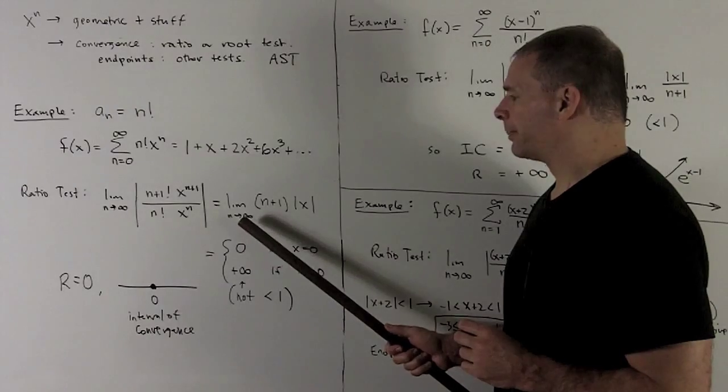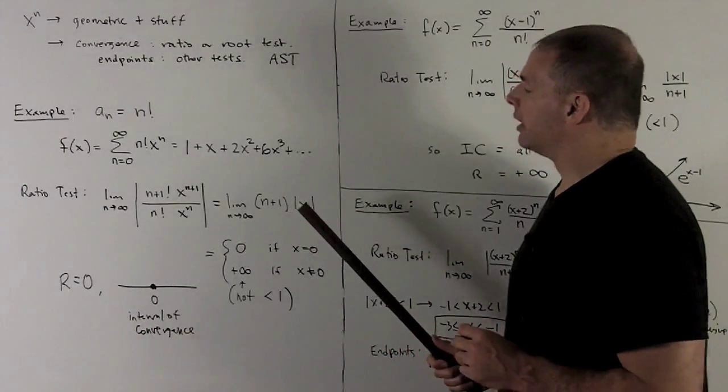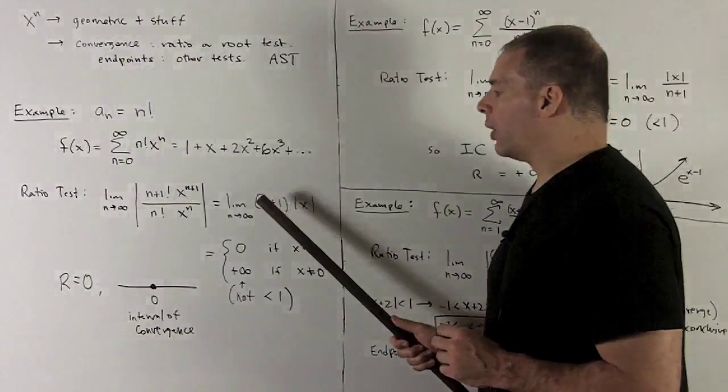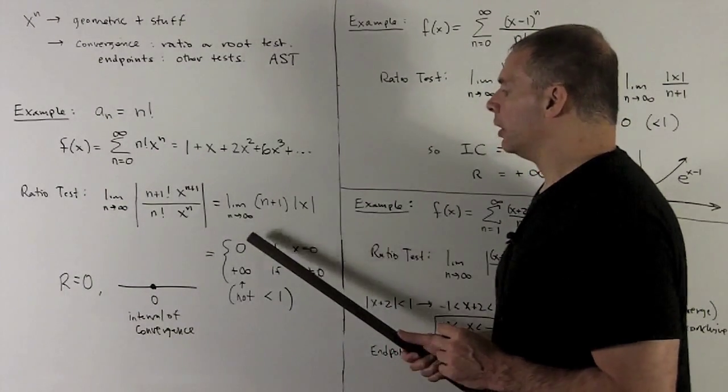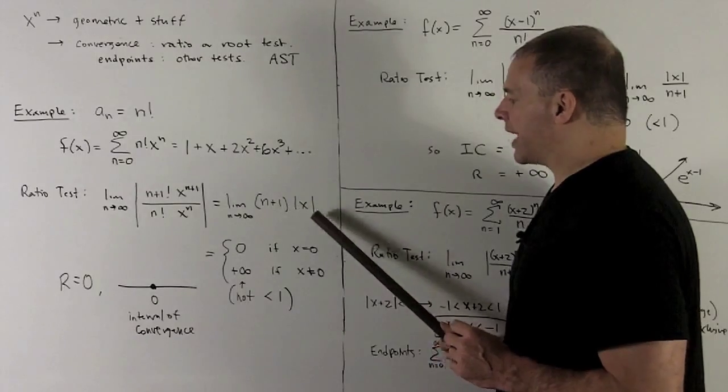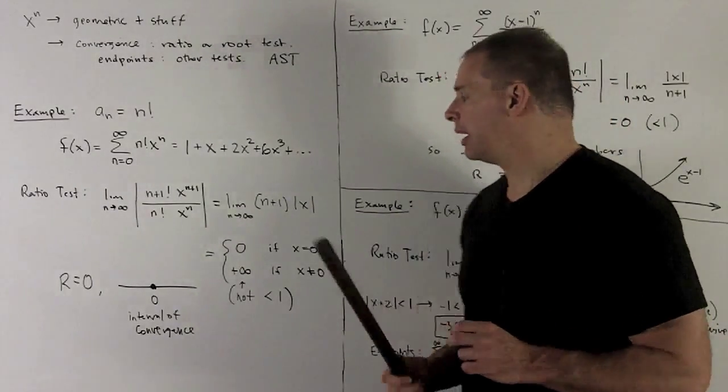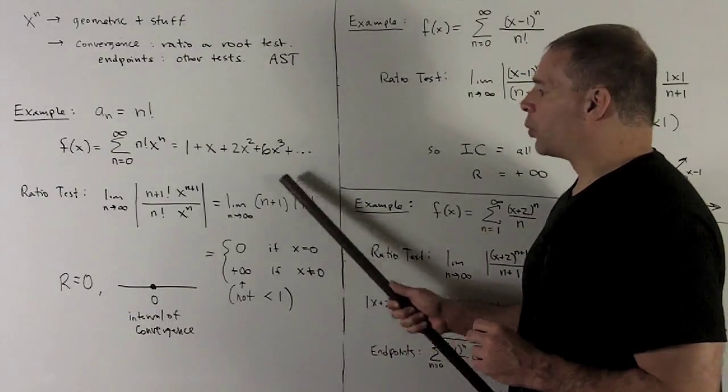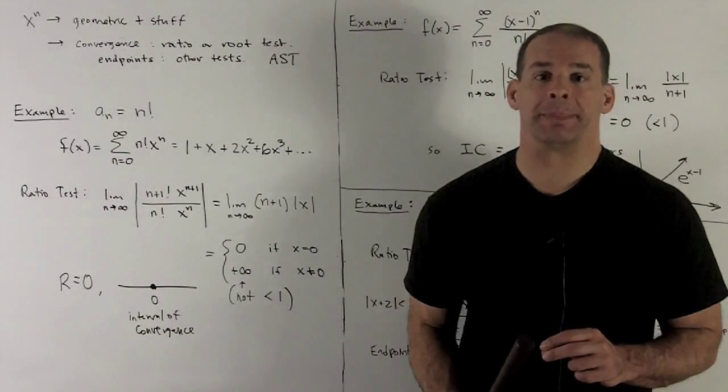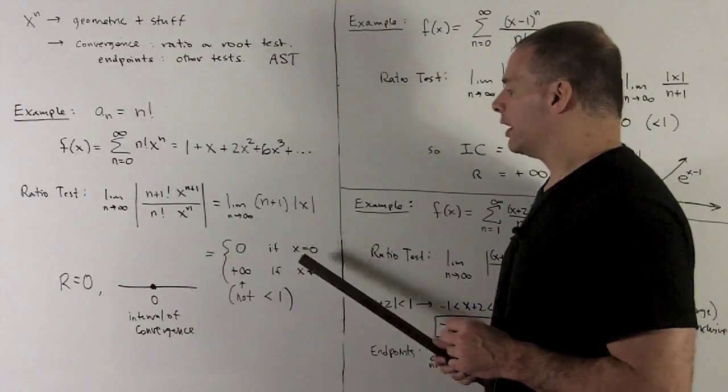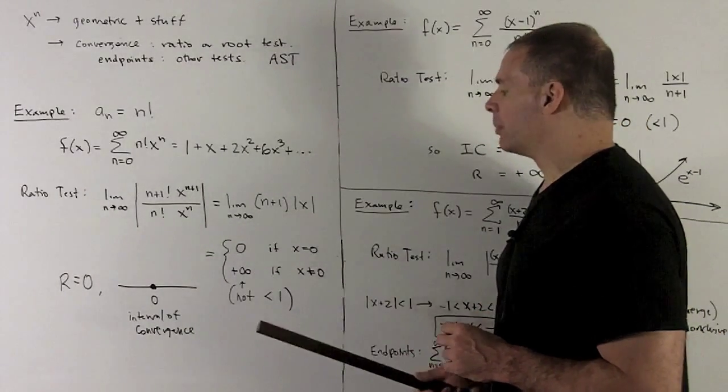Well, as I go off to infinity, only two things can happen. If x is equal to zero, then this thing is always going to be zero. And so the limit will be equal to zero. And otherwise, if x is a non-zero number, remember, it's fixed. So you might as well pretend it's two. Well, this n plus one is just going to go off to plus infinity. So the only two possibilities that can happen, I'm either getting a zero if x is zero and otherwise plus infinity.